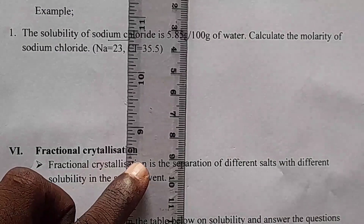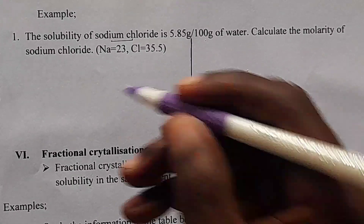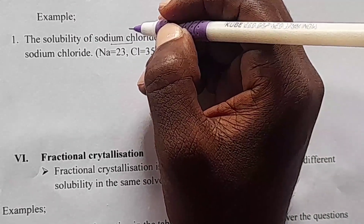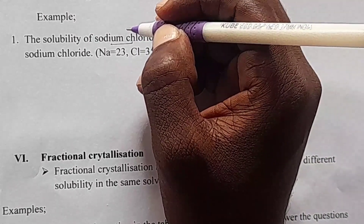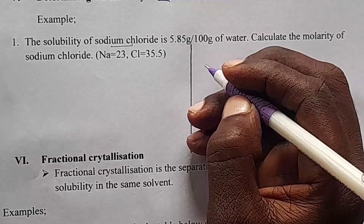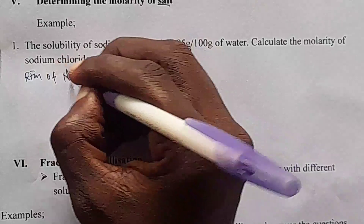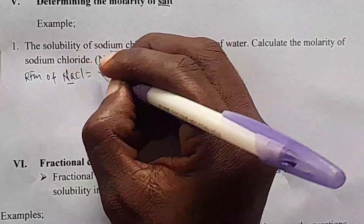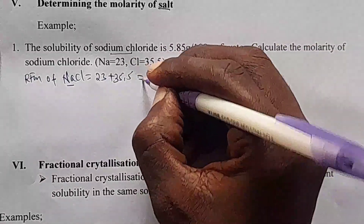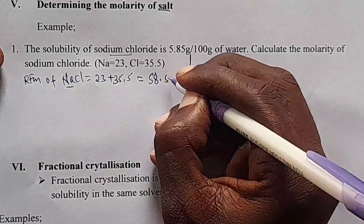I want to do this question in two ways. The first way uses the formula: molarity equals moles times 1,000 over volume used. To get moles, I need mass and molar mass. They have given us the mass, so I have to find the molar mass or RFM. The RFM of sodium chloride is: sodium is 23 plus 35.5 for chlorine, which gives 58.5.